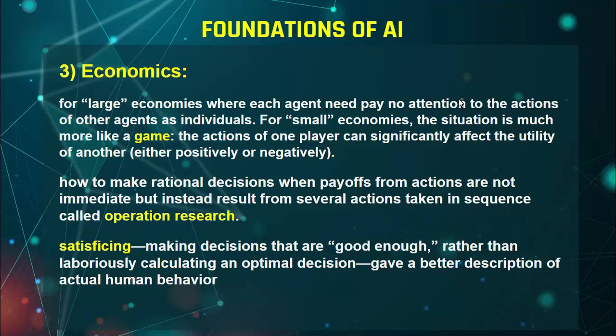Then satisficing — satisficing means making decisions that are good enough, rather than laboriously calculating an optimal decision. For example, if a robot has an obstacle in front of it, the robot's main focus will be to ignore that obstacle and go around it from the side. So in satisficing, it takes a longer path but gets past the obstacle.